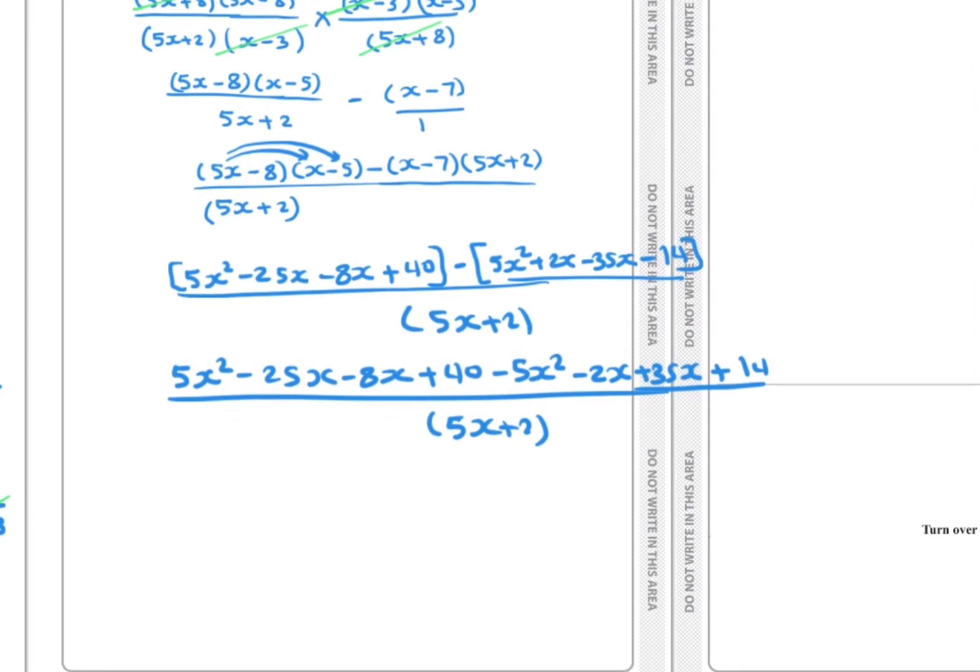Now we can simplify the numerator. 5x² cancels with -5x². Now for x: we have -25 and -8, so -33. Minus 2x, so -35. -35 plus 35, so 0. All x terms cancel.